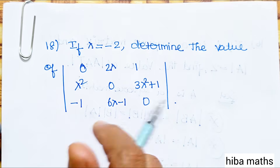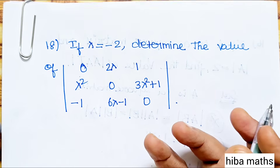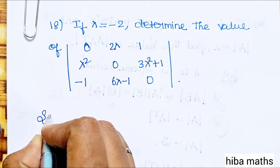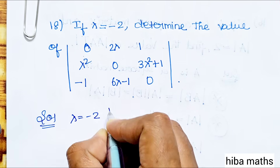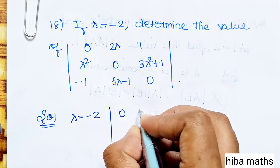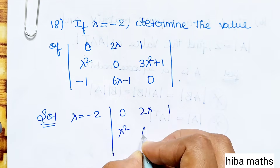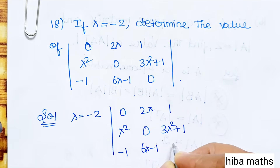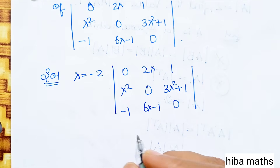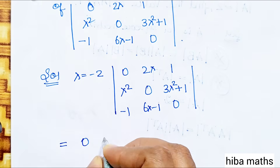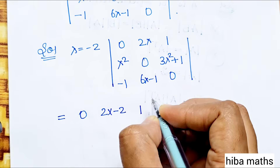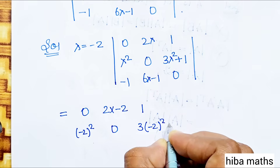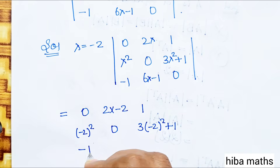To solve this, we add the determinant of lambda and substitute λ = −2 into the matrix. So the matrix becomes: 0, 2(−2), 1; (−2)², 0, 3(−2)²+1; −1, 6(−2)−1, 0.